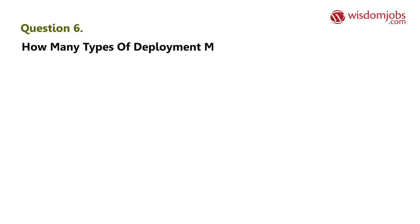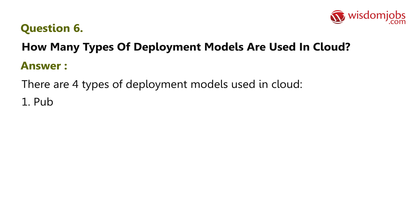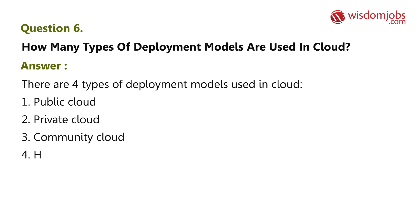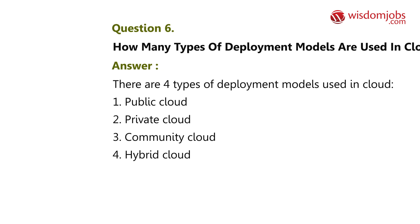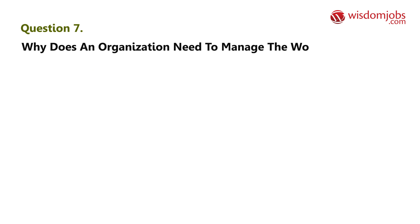Question 6: How many types of deployment models are used in cloud? Answer: There are four types of deployment models used in cloud: 1) Public cloud, 2) Private cloud, 3) Community cloud, 4) Hybrid cloud.